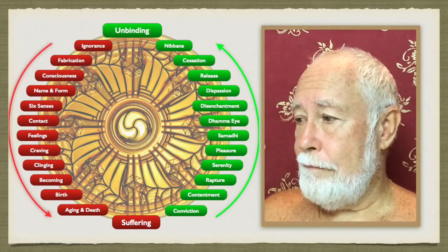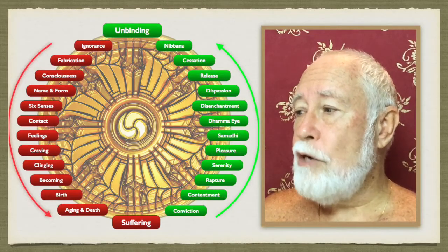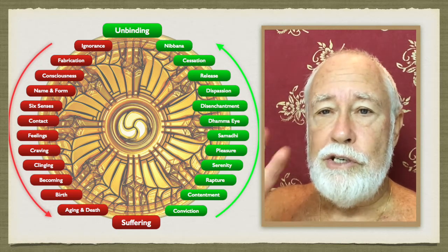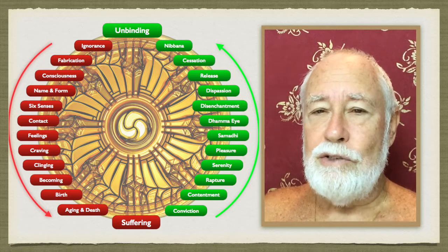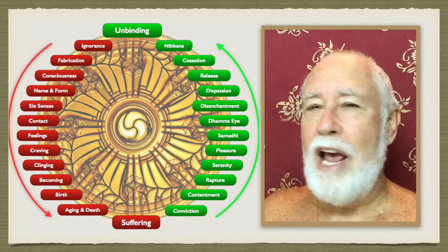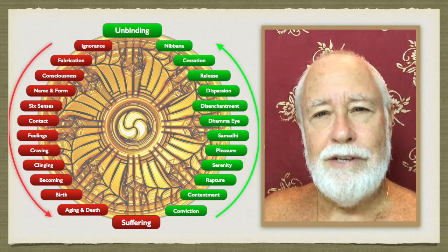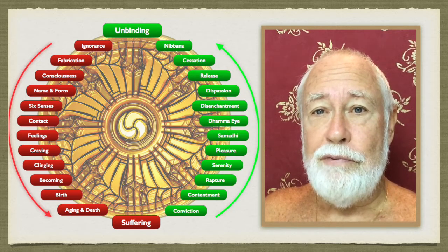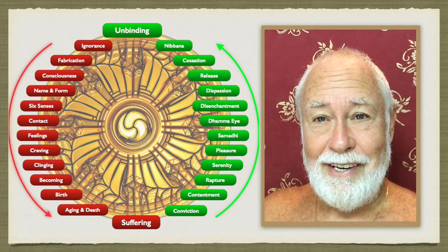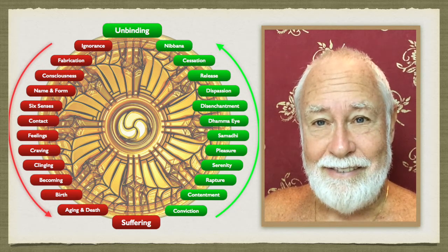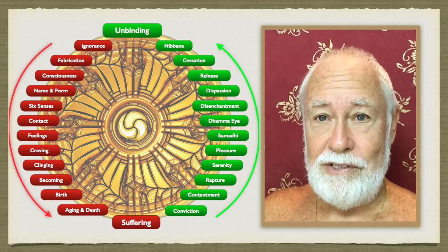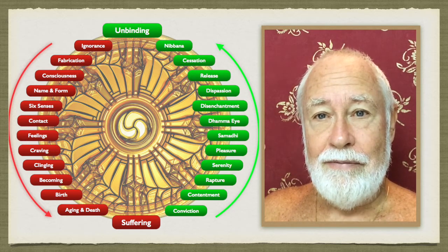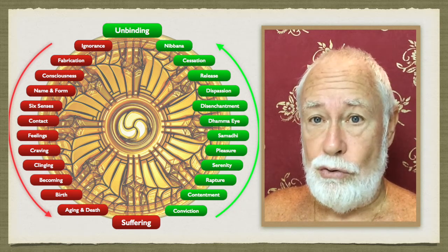So where does it start? It starts from ignorance. And this ignorance is threefold. You'll see how this structure brings everything in the Buddha's teaching together in one place. It's really awesome. The threefold ignorance is love, hate, and indifference. Or liking, disliking, and ignorance.